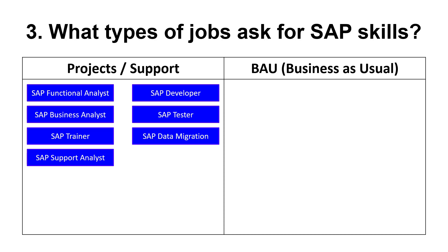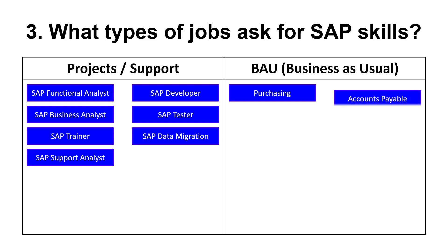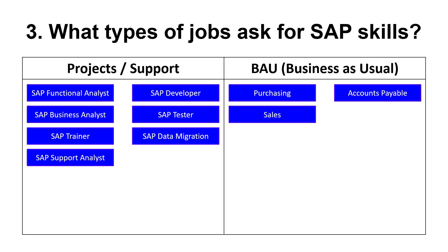But once SAP has been implemented, the end users need to use the SAP system to record activities carried out by the business. For example, purchasing and sales, and generate financial reporting. These are some of the typical end user roles that require SAP skills: Purchasing, for creating shopping carts or purchase requisitions, maintaining purchase orders and posting goods receipts. Accounts Payable, for parking and posting vendor invoices and making vendor payment runs. Sales, creating sales orders and outbound deliveries. Accounts Receivable, billing, cash receipts and credit management.